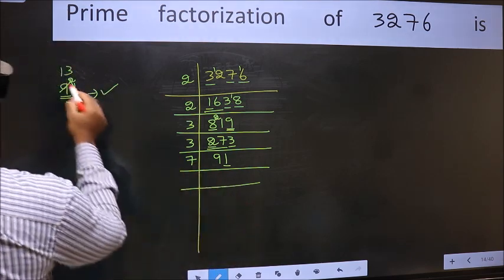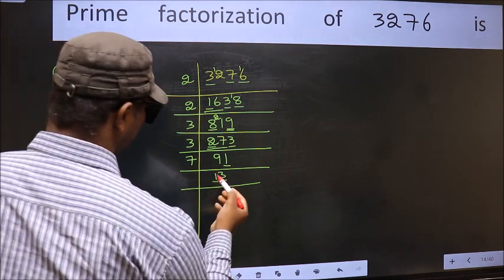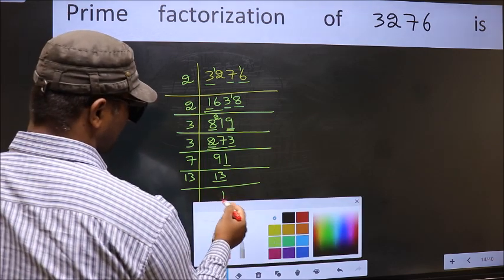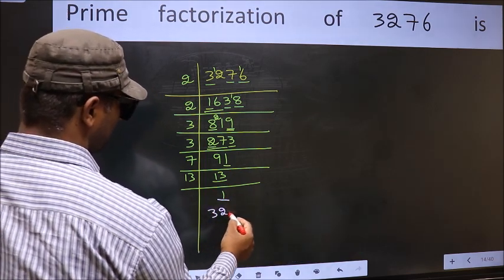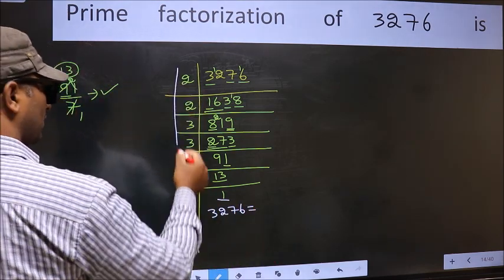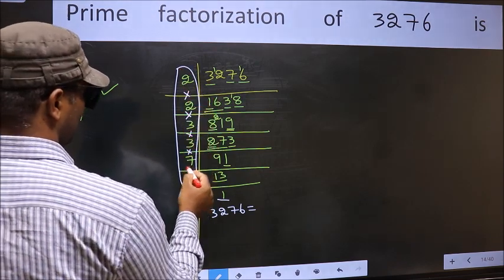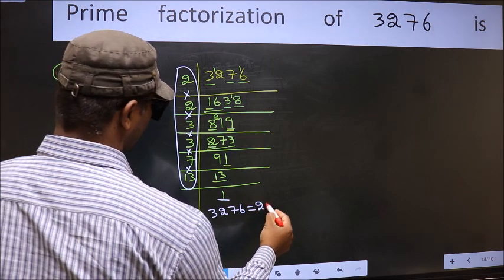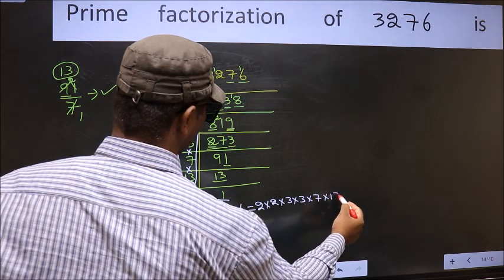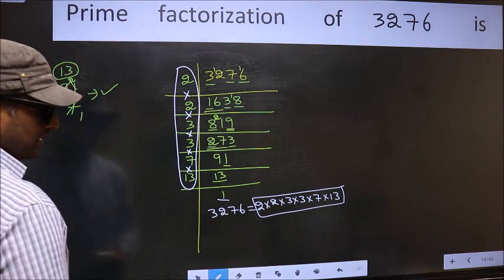And here we should write the number 13. Now we have 13, which is a prime number. So 13 times 1 equals 13. We get 1 here. So the prime factorization of 3276 is the product of these numbers: 2 times 2 times 3 times 3 times 3 times 7 times 13. This is the prime factorization of 3276.